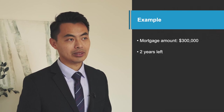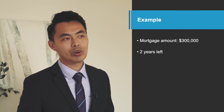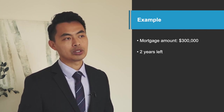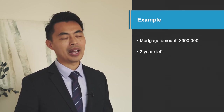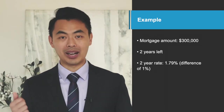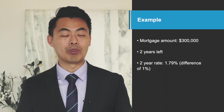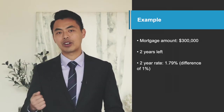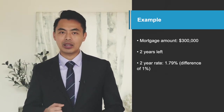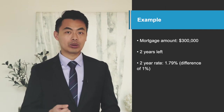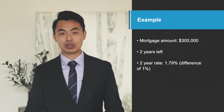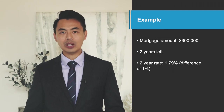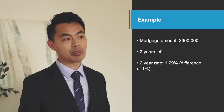The mortgage amount in the example is $300,000, and you've got two more years left in your five-year term mortgage, and you're going to sell your property and pay out your mortgage. But rates are now much lower. Since you've got two years left, the bank will look at what the two-year rate is and say it's 1.79%, which means there's a difference of 1%.